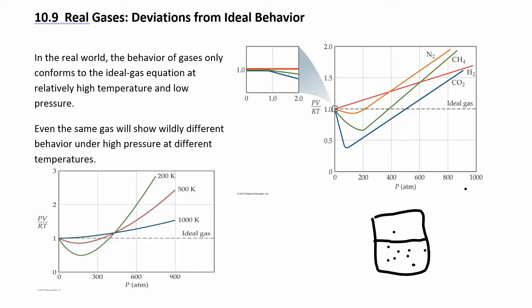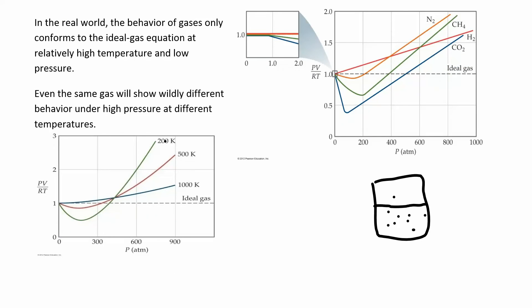At high pressure, molecules start to behave less ideal. They're deviating more from ideal, more real. You can look at the same gas at different temperatures. At higher temperatures, you behave more ideally.